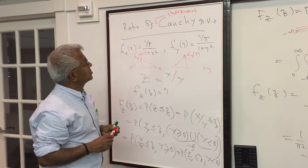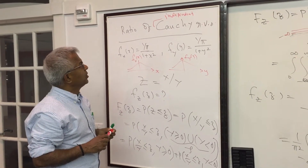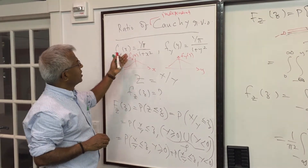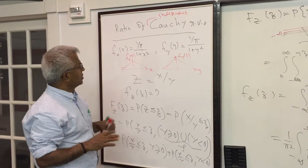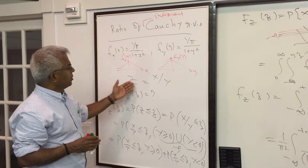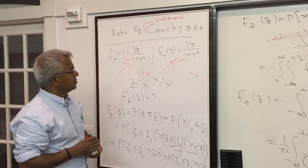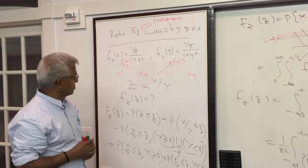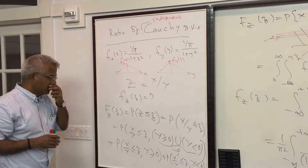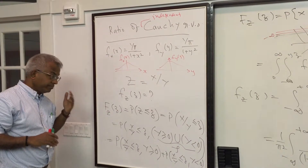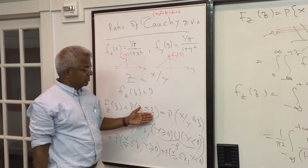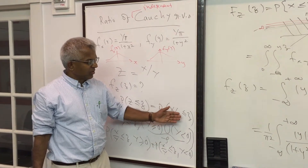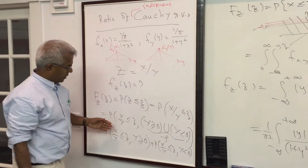Let's look at one problem: the ratio of two independent Cauchy random variables. X and Y are Cauchy and independent, and we consider their ratio Z = X/Y. What is the density function of Z? We start with the distribution function, which is the probability that Z ≤ z, i.e., X/Y ≤ z.